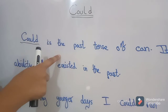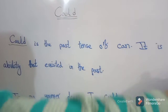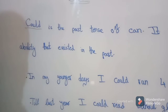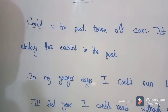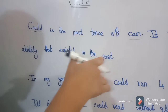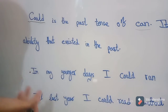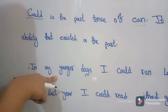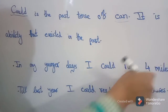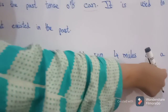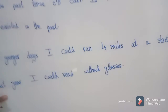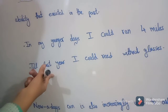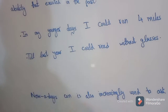Could is the past tense of can. It is used to talk about the ability that existed in the past. For example: in my younger days, I could run four miles at a stretch. Till last year, I could read without glasses.